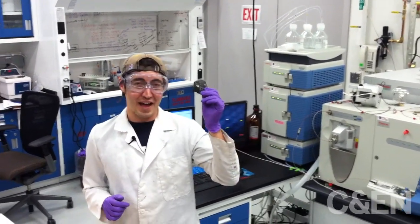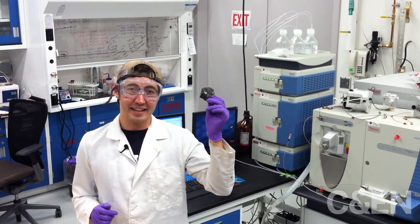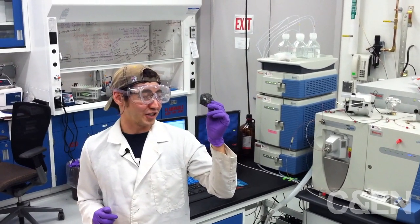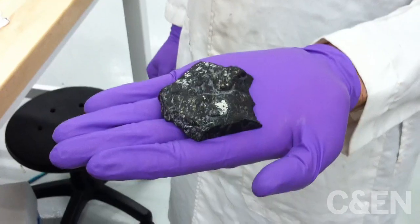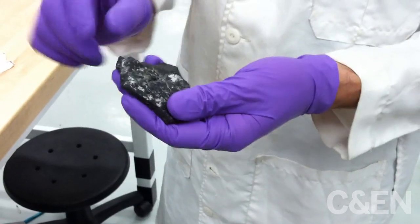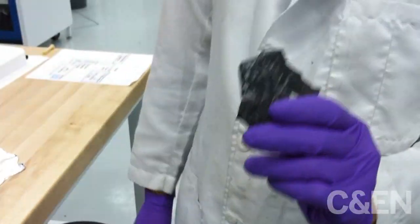This is actually a fragment of a meteorite. In this case, this is called Allende. It's a carbonaceous chondrite, which is a meteorite rich in organics and carbon. These are the meteorites we typically analyze in the laboratory.